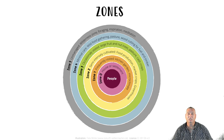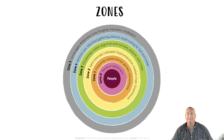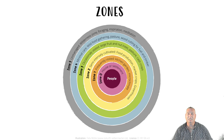Though traditionally zones are shown as a concentric circle, it is not always the case with regards to our designs. What we do is map out where we access our site, and from there we can determine how often we're in a particular activity node. Where we spend most of our time becomes our zone 1, and it decreases exponentially.